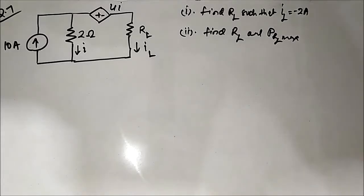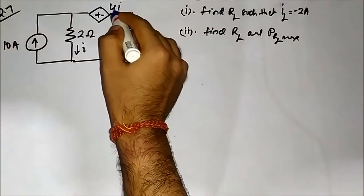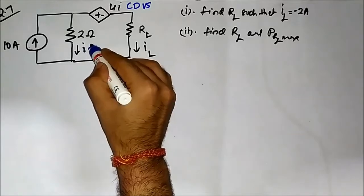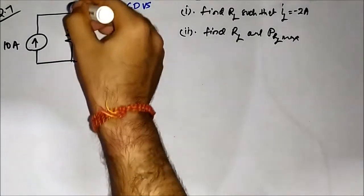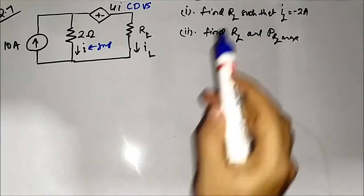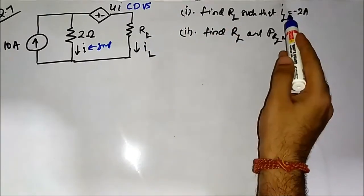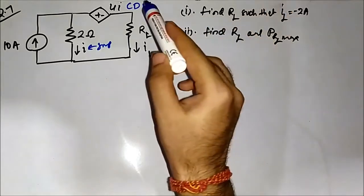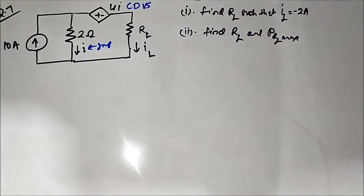Hello friends, welcome to Engineering Tutorial. This is the 7th question related to Maximum Power Transfer Theorem for circuits involving dependent sources. The circuit has a current-dependent voltage source, with the important dependent variable being the current flowing through the 2 ohm resistor. Two things are asked: first, find the value of RL such that the load current IL equals minus 2 ampere; second, find the value of RL for maximum power transfer.